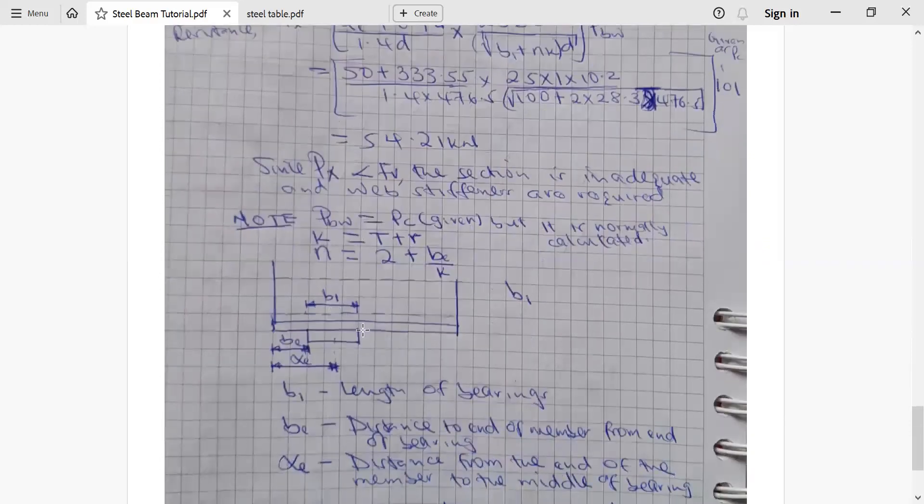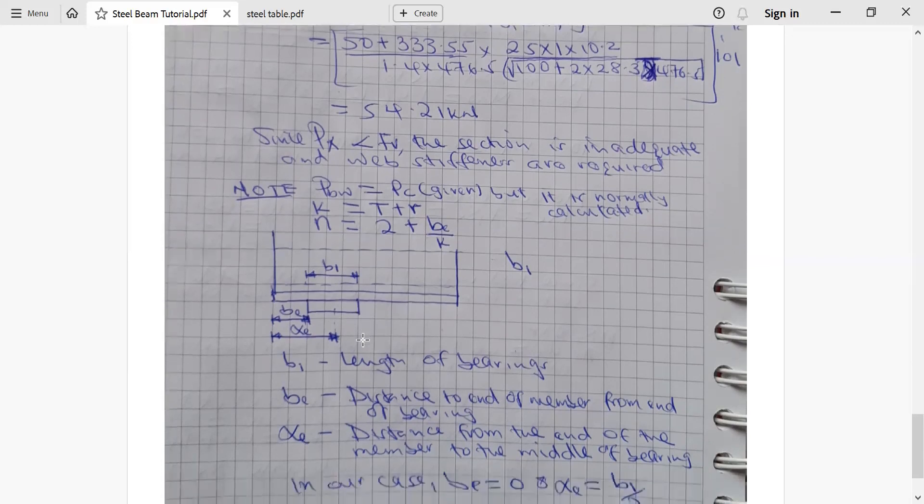Now look at B1. B1 is the bearing length. Bearing length, we are told it is 100 mm. Then B subscript E is the distance from where the member ends and from where the bearing ends. For our case here, we assume that the beam flushes with the bearing, meaning BE is 0. Like the end of the beam and end of bearing, they are at the same level.